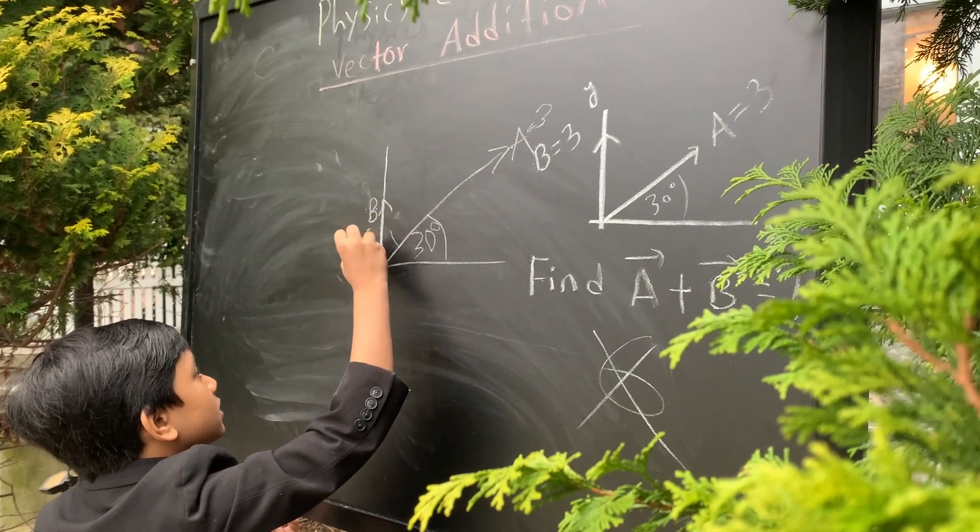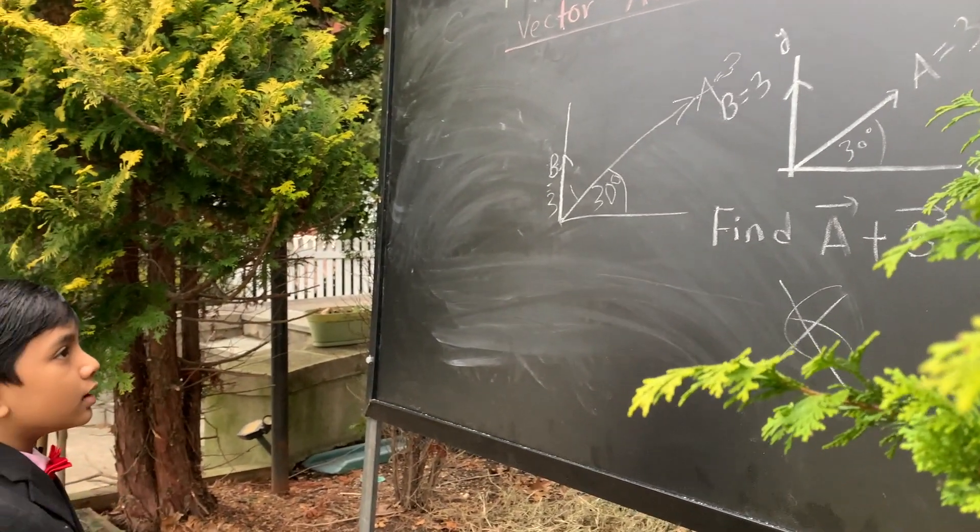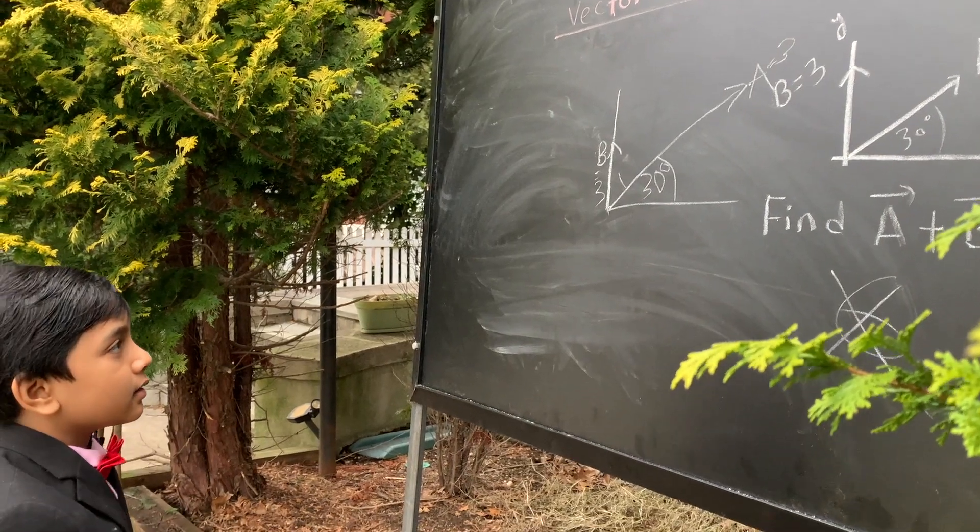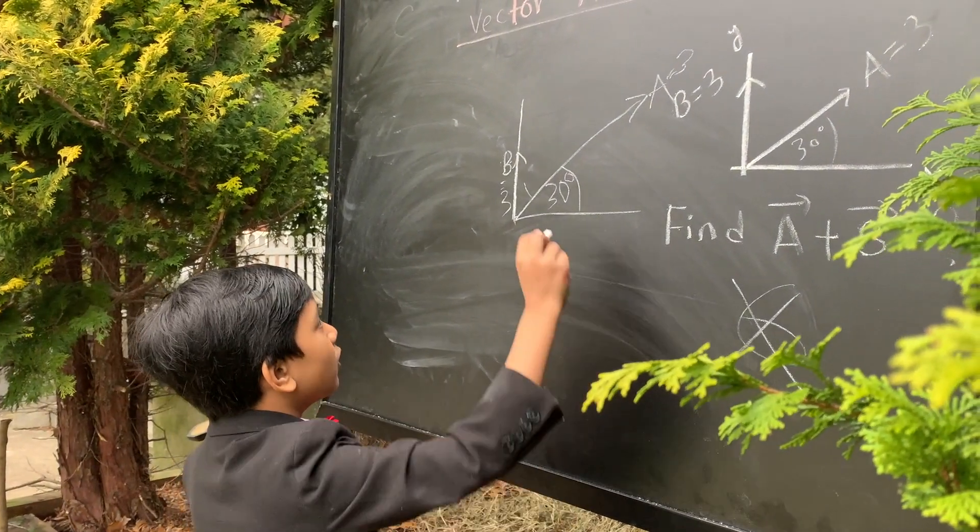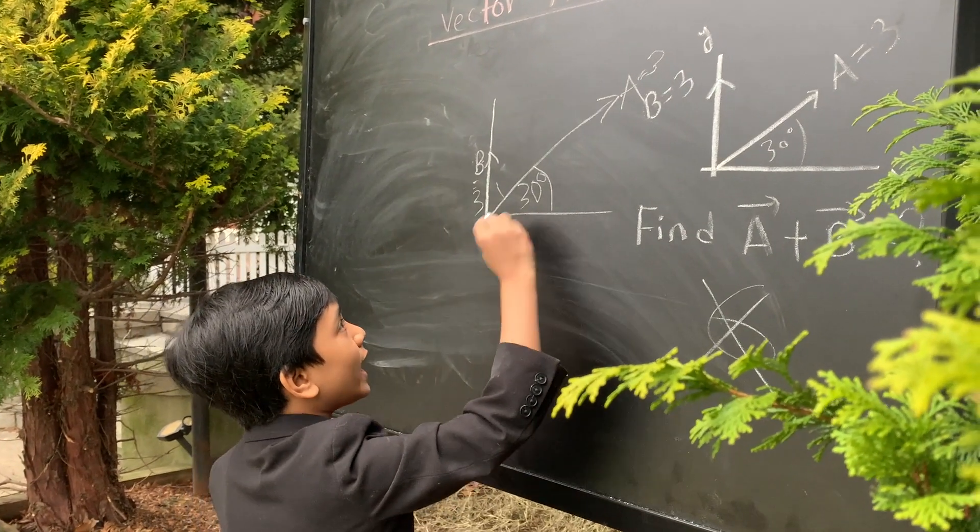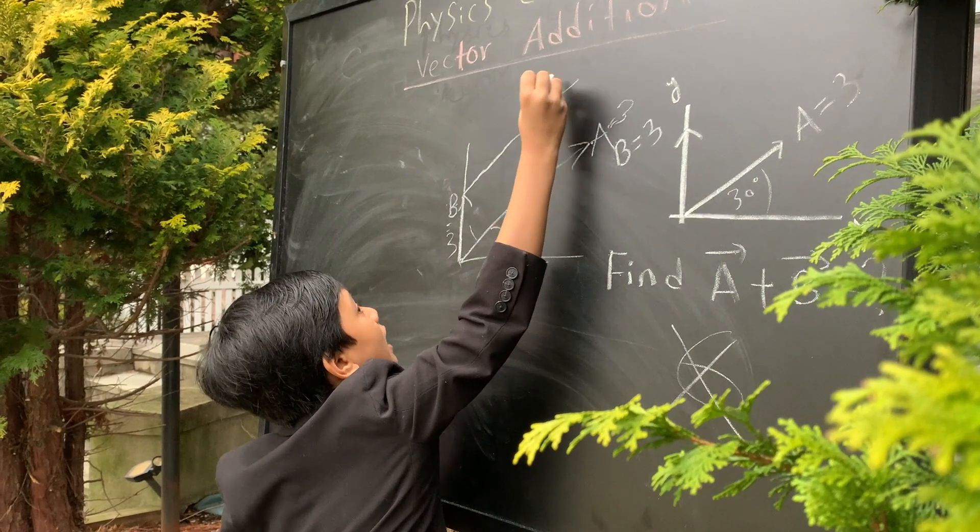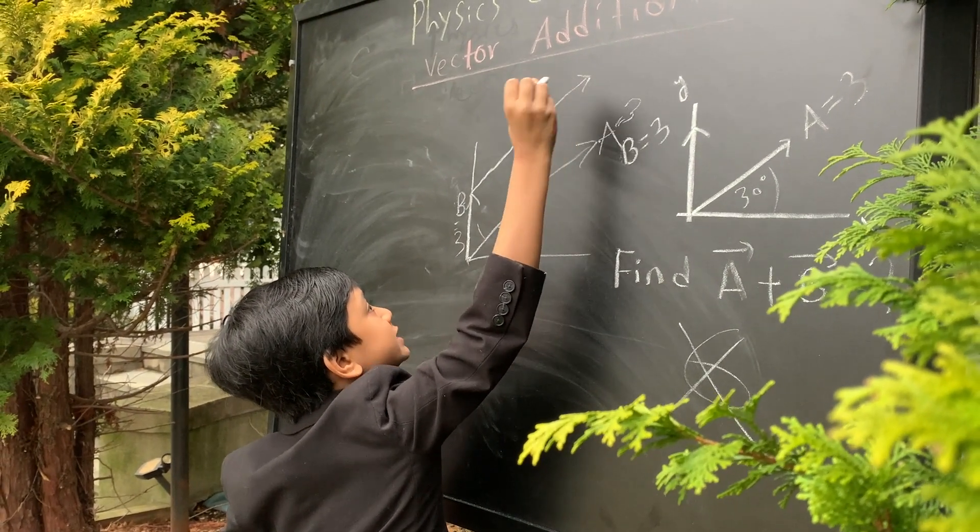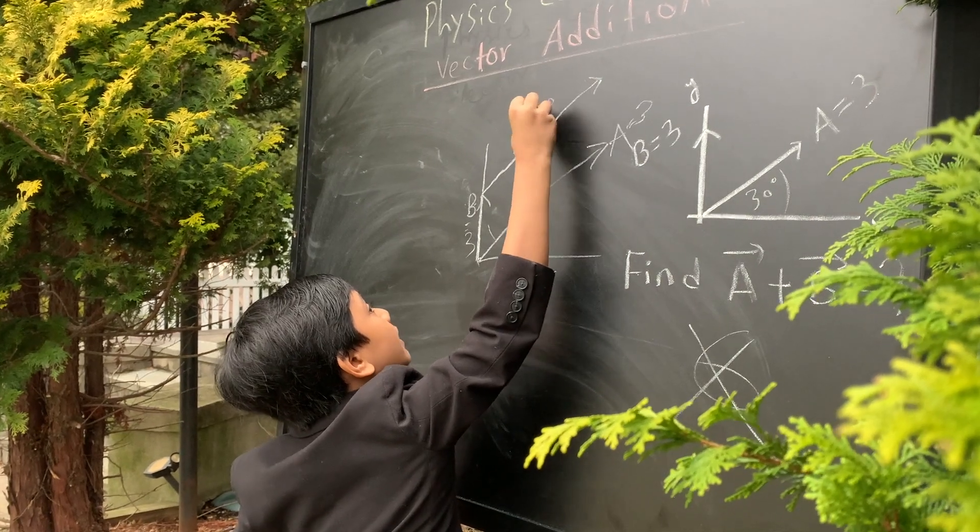And you need to find what A plus B is. So, how do you find the sum of A and B? Well, it's actually a tiny bit simple. First, let's clone A and put it on top of B. Now, we have a ghost A, which also has a magnitude 3.